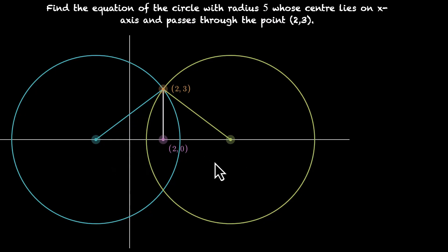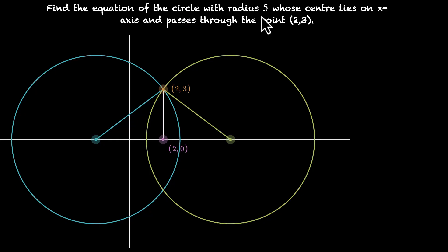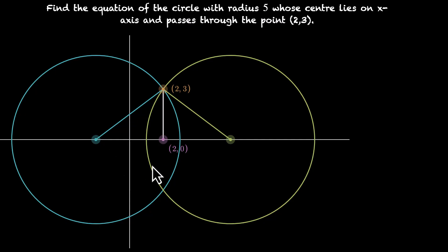If we drop from 2 comma 3 down to the x-axis, that point is 2 comma 0, and the vertical distance is 3 units since we are 3 units above the x-axis. The hypotenuse of this right-angled triangle is the radius, which is 5. So with one side 3 and hypotenuse 5, the other side is 4 units. The center is 4 units to the right and to the left of 2 comma 0: 2 plus 4 is 6 and 2 minus 4 is minus 2. So the centers are minus 2 comma 0 and 6 comma 0.